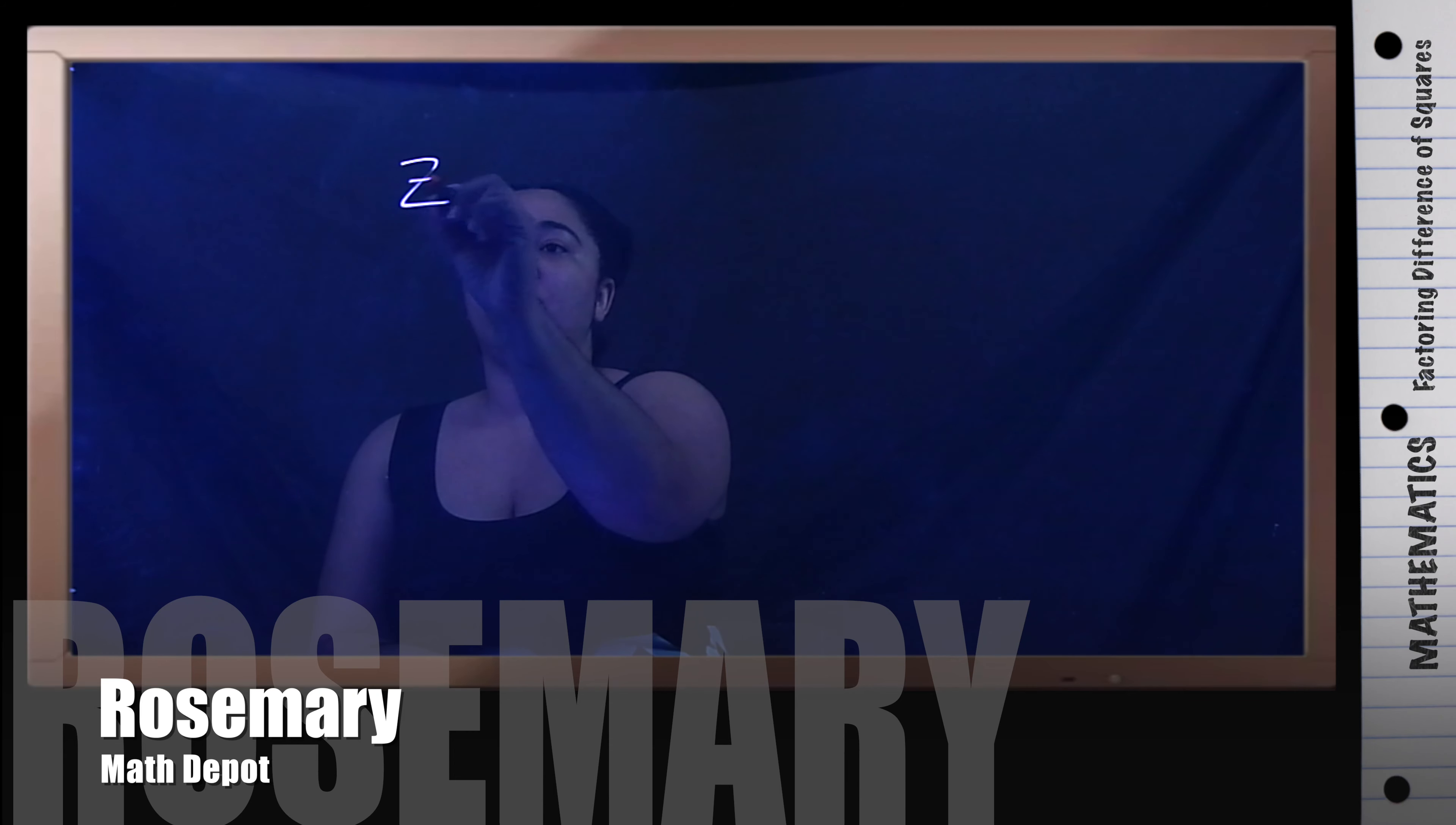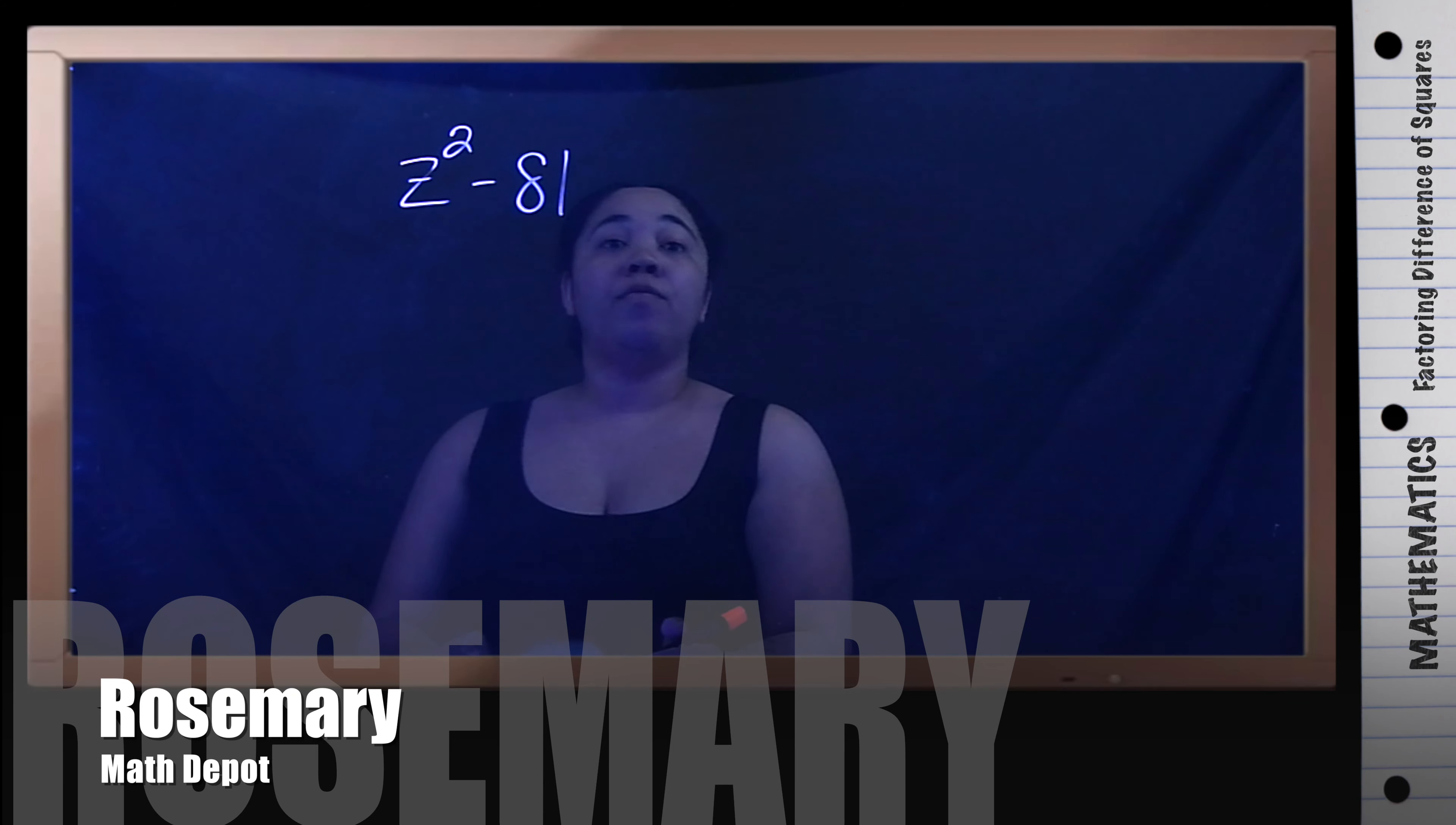Difference of squares is unique because there are several characteristics to the problem. For one, there are two terms that you only can use. Also, there's a subtraction. And three, they're dealing with squares, perfect squares.